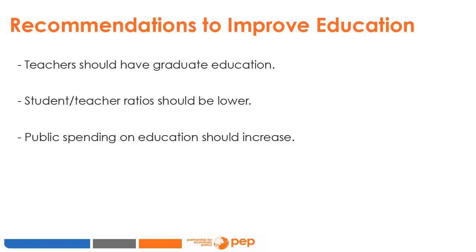At that time in the 60s, there was a consensus on some actions that should be taken to improve the quality of education. These recommendations came from a mixture of theoretical models, behavioral assumptions, and secondary data. To improve the quality of education: teachers should be more educated, more teachers should have graduate education, student-teacher ratio should be lower, and public spending on education should increase. The data suggests that the government did globally follow these recommendations in the US.